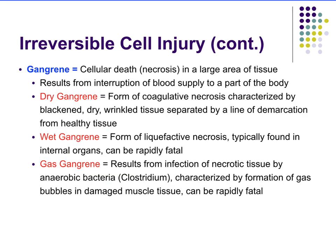Gangrene is necrosis in a larger area of tissue, often due to ischemia. Dry gangrene is a form of coagulative necrosis — tissue becomes black, dry, and wrinkled with a clear demarcation line separating dead from healthy tissue. Wet gangrene is a form of liquefactive necrosis found in internal organs and is rapidly fatal. Gas gangrene results from infection of necrotic tissue by anaerobic bacteria — clostridium — causing gas bubble formation in damaged muscle tissue, and can also be rapidly fatal.